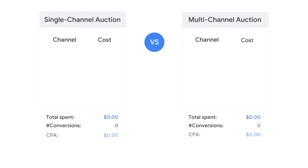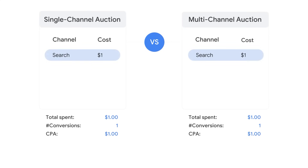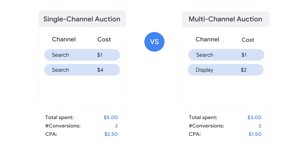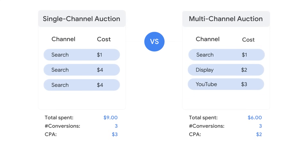Let's say you have a search campaign. Your first conversion might only be $1 and you'd get that same conversion in Performance Max. But your next conversion on search might cost $4, because that's the next cheapest conversion on search, while your Performance Max campaign finds you a conversion on display for $2. And in the next auction, search finds another $4 conversion while Performance Max finds you a $3 conversion on YouTube.